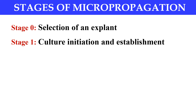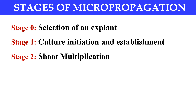The next stage is Stage 1, which is the culture initiation and establishment stage. In this stage, we just initiate the culture — we sterilize our explant. The sterilization of the explant takes place, and now this sterilized selected explant is moved to the suitable medium for culturing. The cultures are incubated at 25 degrees centigrade, 3000 to 5000 lux light intensity, and 50 to 70% relative humidity. These are standard conditions; they may vary from species to species.